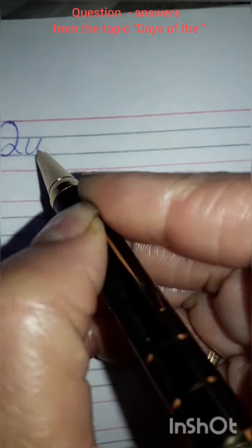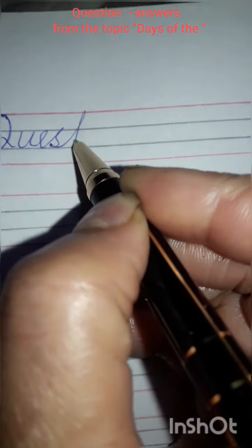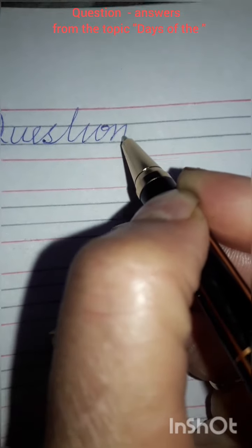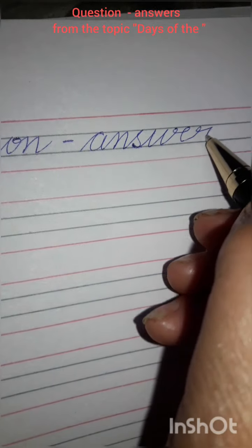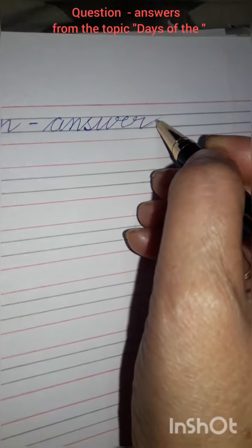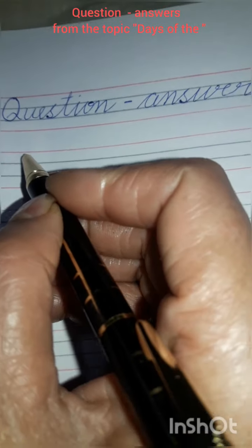Firstly we will write down the heading here. Write here capital Q-U-E-S-T-I-O-N question. Put a dash. Then you will write down answer. A-N-S-W-E-R. Question answers. You have to write down S here.